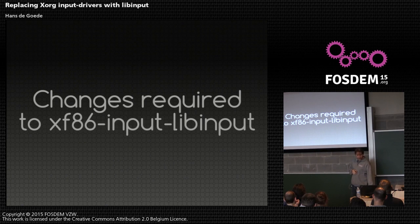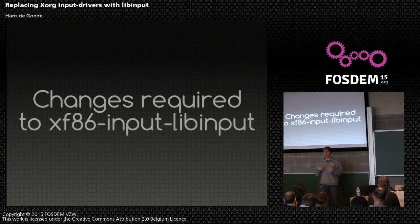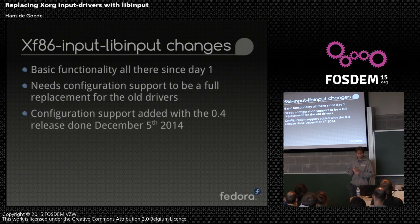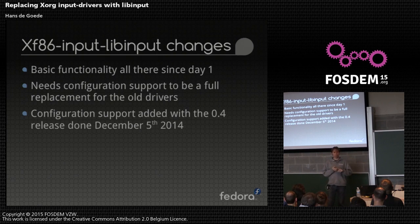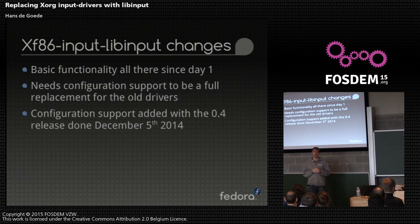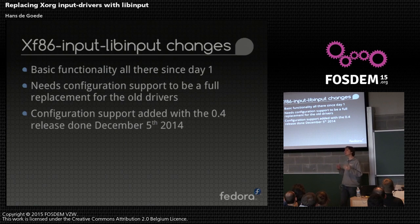So what changes were required to xf86-input-libinput? We started this just as a testing toy to dogfood our own input stack day to day. Basic functionality like key presses, moving the mouse pointer, and buttons were all there since day one. All we really needed to add was a configuration API, because users may want to use tap-to-click on a touchpad or they may hate it — I'm one of the haters, I disable it. So we needed to be able to configure some things.